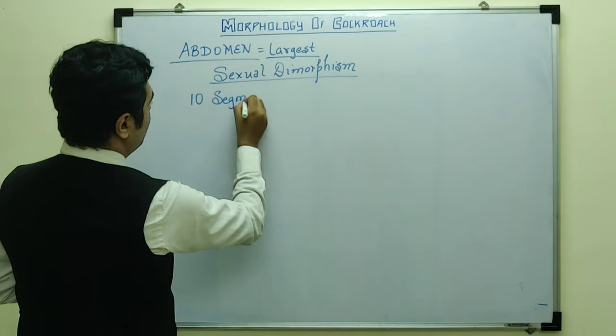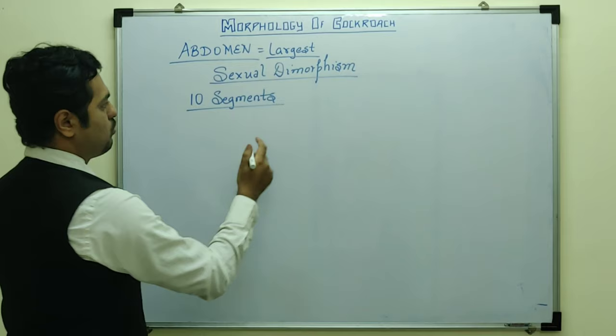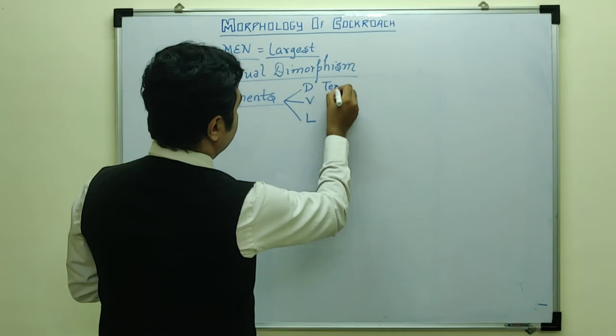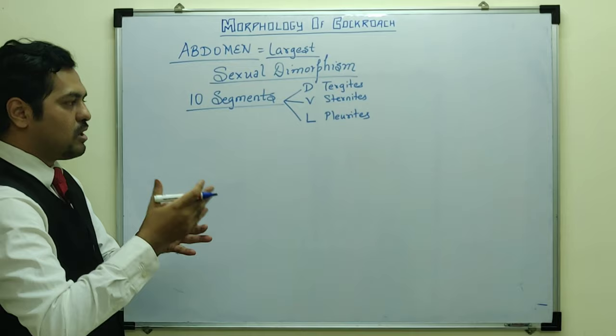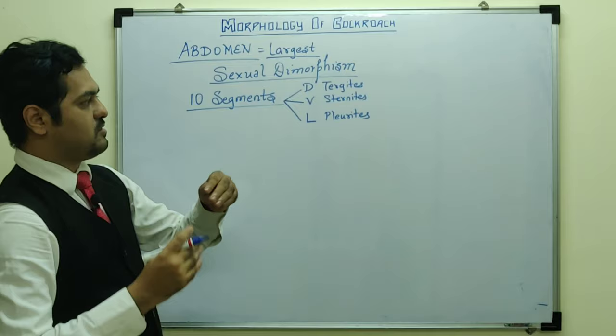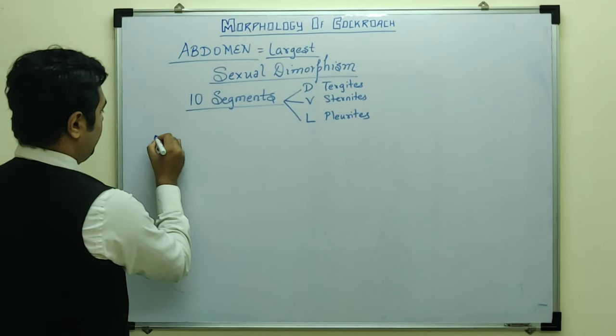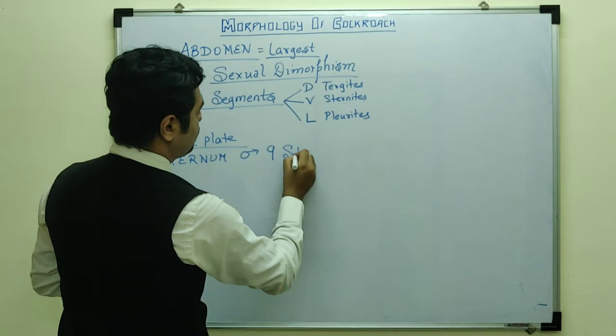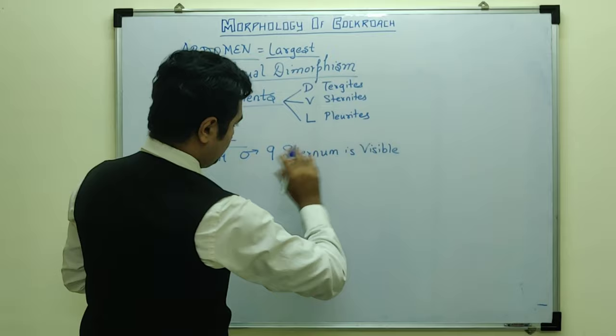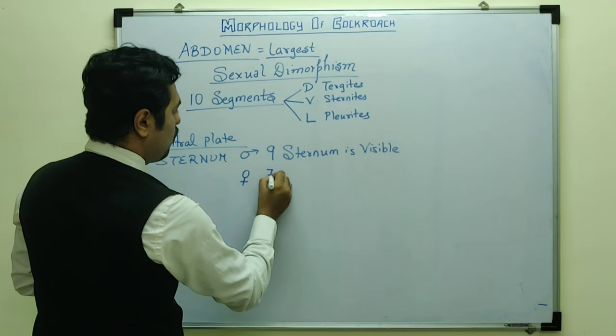The plates are called tergites dorsally, sternites ventrally, and pleurites laterally. The dorsal plates: 10 tergites are visible in both male and female cockroaches. For the ventral plates: in the male cockroach, 9 sternites are visible — the 10th is not visible as it is fused with the 9th. In the female cockroach, only 7 sternites are visible.